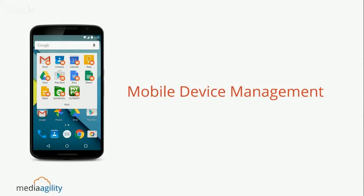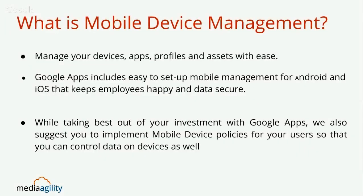When we are using a single device where we access our consumer data — that is individual data — and on the other hand we access enterprise data, the biggest concern is: who owns the data, who can control the data, what kind of data can be controlled, and what kind of data can be separated or segregated from a user's data? On this screen you can see at the top a Google mail icon with a symbol, and at the bottom a different icon without a symbol. This is where we differentiate the access between consumer data and user data.